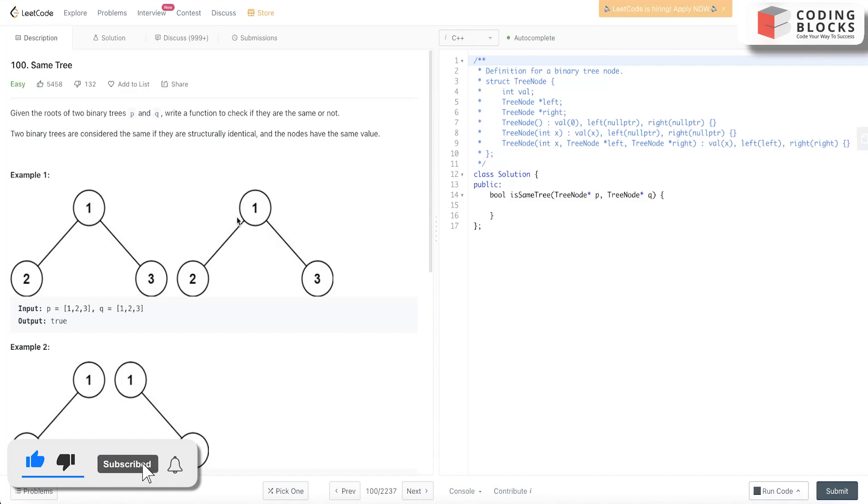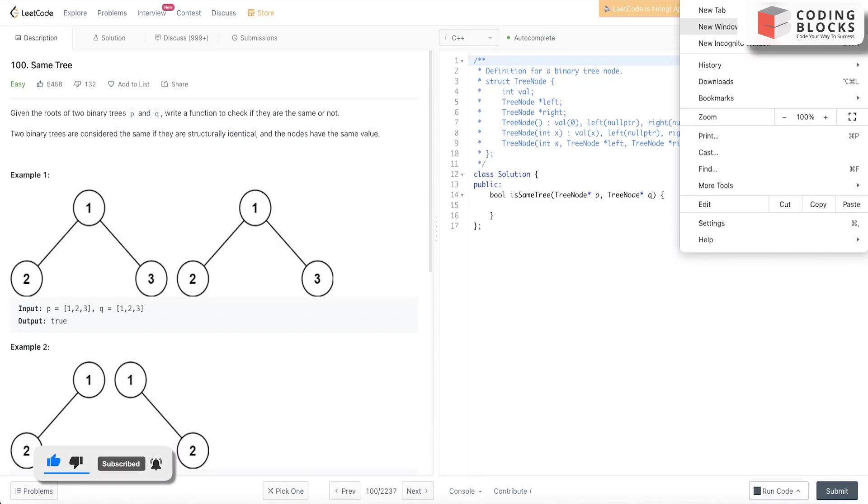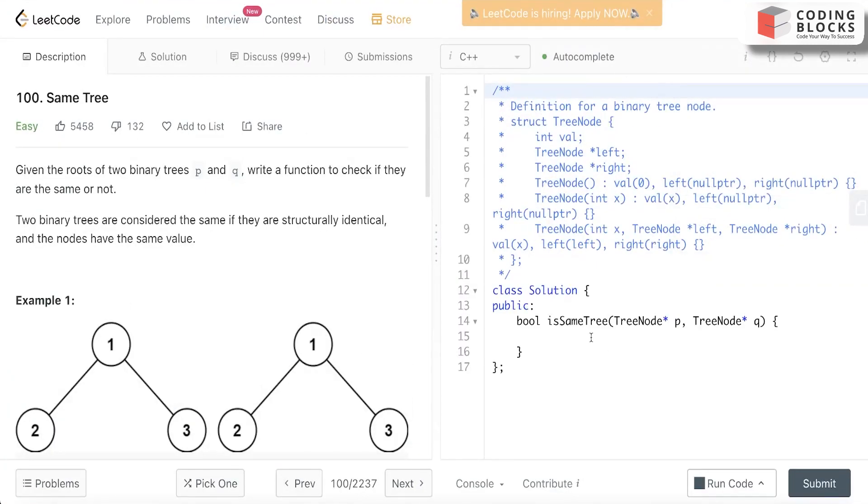For a tree to be same, only a few things will matter. First, the values of P and Q should be same for both left and right children, and obviously both of their values are same and it is same for everything.